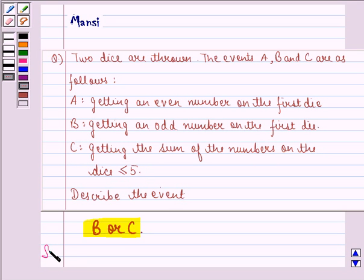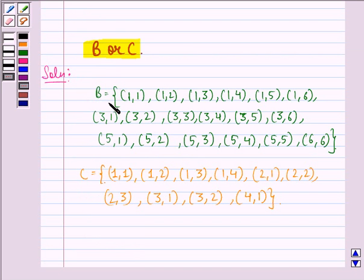So let us see the solution. First of all, we will see how the events B and C are described. So we write down the sample space for event B. Then we write down the sample space for event C. So we see that this is the sample space for B and this is the sample space for event C.